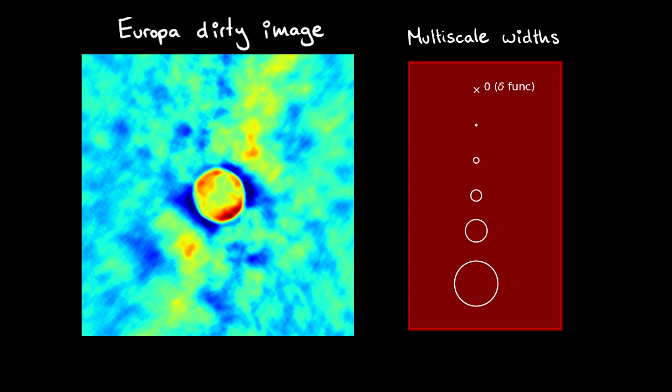For Europa, we chose four size scales to fill in the gap between the smallest and largest, which you can see as circles of various sizes on the image here.